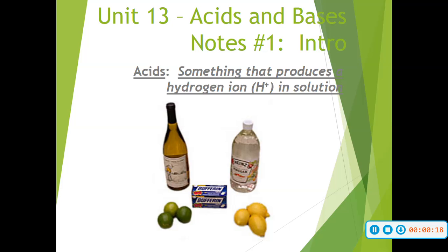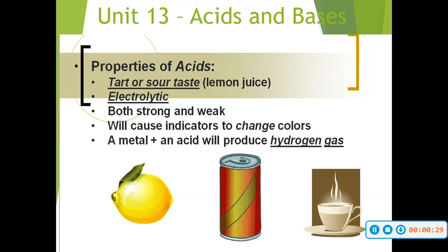Most of the time, if you see hydrogen as your first element in that compound, then that is most likely an acid. Some properties of acids: acids have a tart or sour taste. Something like lemon juice — that's sour and tart — that's going to be acidic. They are also electrolytic. From our previous unit, we defined an electrolytic compound as something that produces electricity.